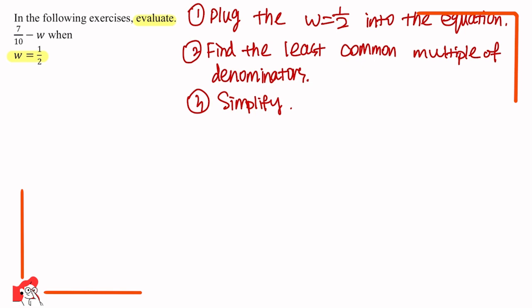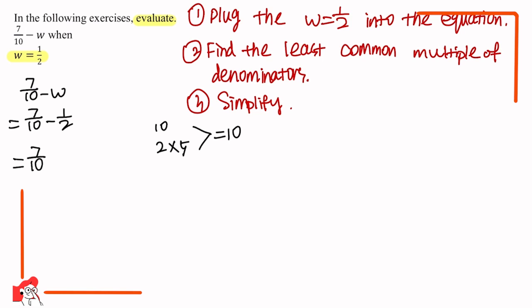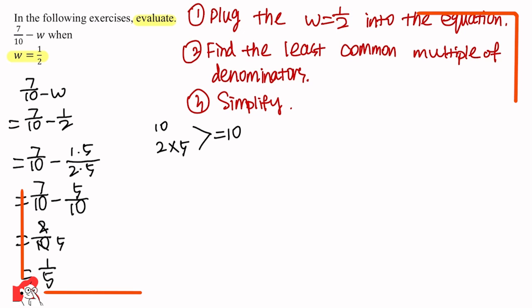Now let's solve this question step by step. So 7 over 10 minus w equals 7 over 10 minus 1 over 2. Since the least common multiple of 10 and 2 is 10 — because 2 times 5 equals 10 — it becomes 7 over 10 minus (1 times 5) over (2 times 5), which equals 7 over 10 minus 5 over 10, which equals 2 over 10. Since 10 divided by 2 is 5, the final answer is 1 over 5.